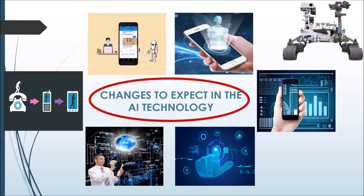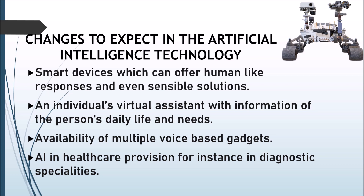We will be looking at an alternative perspective and some features that will be available in future smart homes. The changes we are expecting in AI technology include smart devices which can offer human-like responses and sensible solutions, an individual's virtual assistant with information of the person's daily life and needs, availability of multiple voice-based gadgets, and AI in healthcare provision — for instance, in diagnostic specialties. Creative industries are already taking advantage of AI's ability to bypass human prejudices and assumptions.